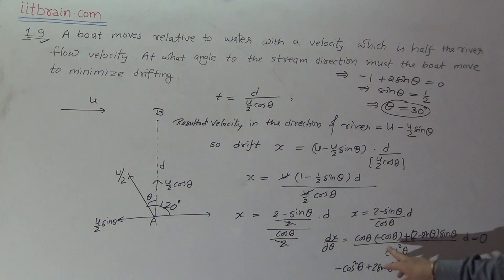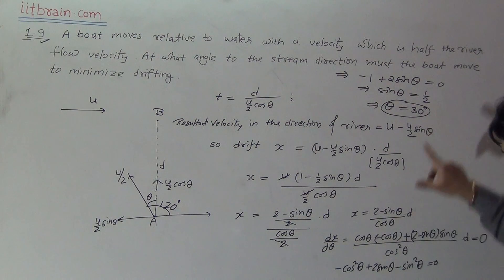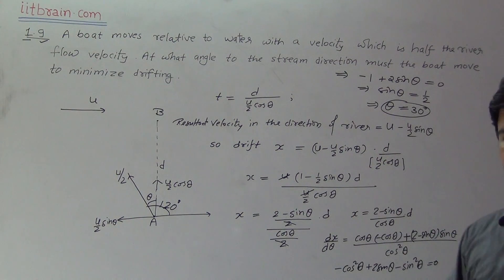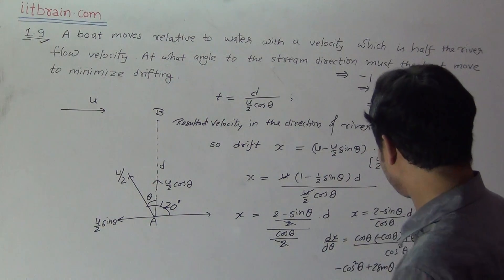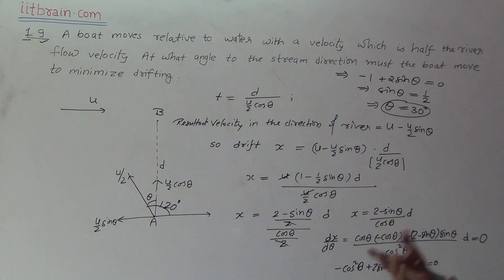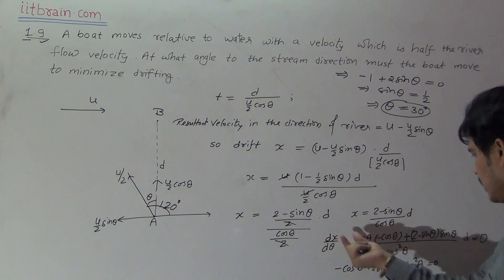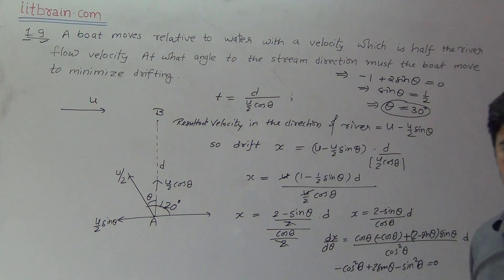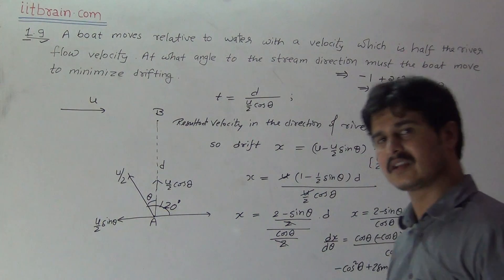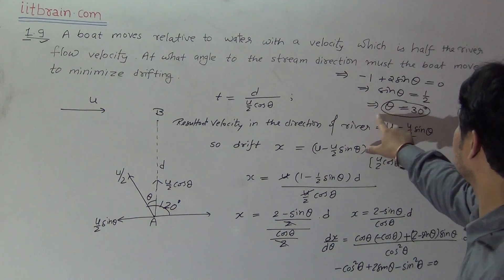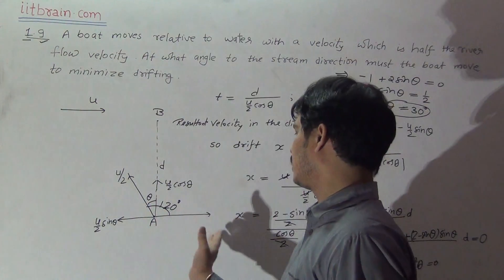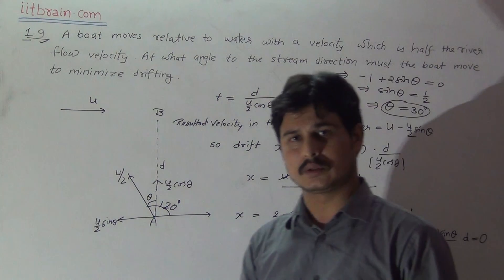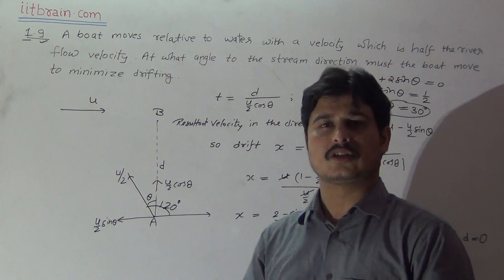This is confirmed to be a minimum. If you double-differentiate dx/dθ and put θ = 30°, you get a positive output, which means x is indeed minimized at this value. So the angle θ = 30° from the AB direction, or equivalently 120° from the river flow direction, is the angle at which the boat minimizes its drifting. Thank you.